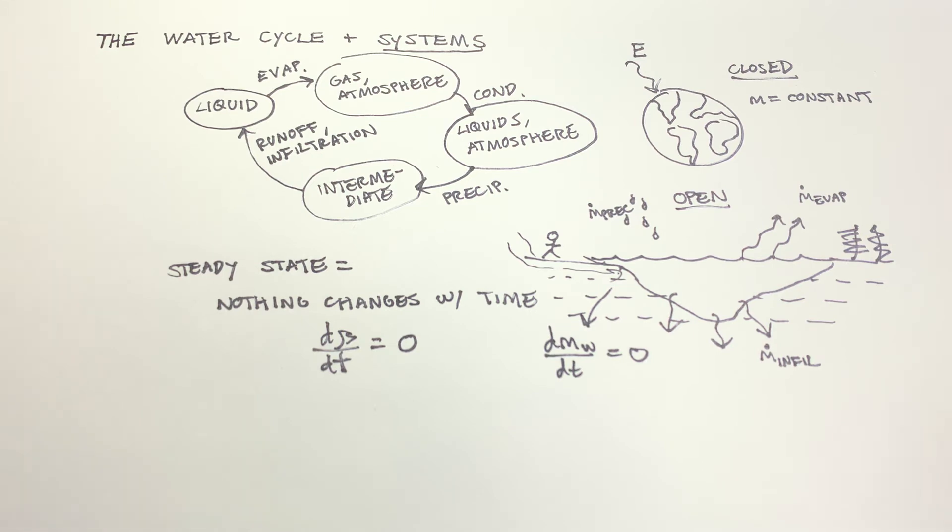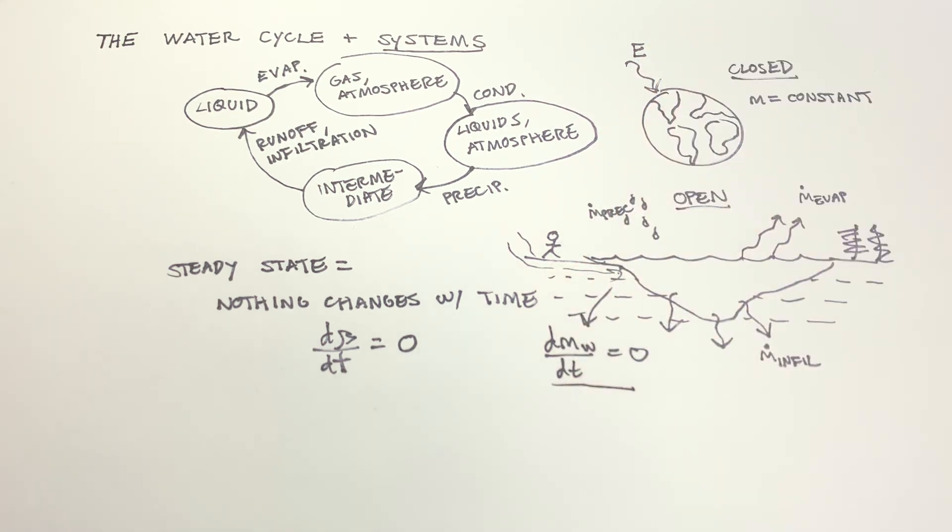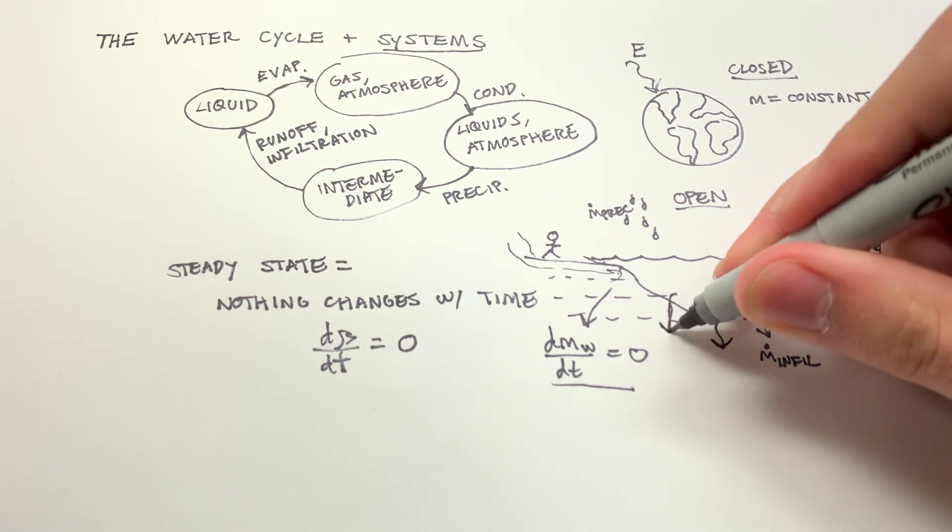Conversely, if we have something like a river, then you might look at the level combined with the rate at which the river is flowing might indicate more water. And these things change with time. The point is, steady state, dmw dt equals zero. We might have that with a lake. We might have that with an aquifer.